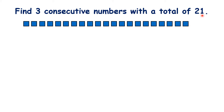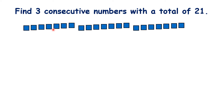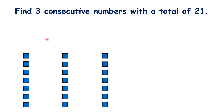Pause the video and see if you can find the three consecutive numbers that make 21. We have 21 blocks here and because we want to find three consecutive numbers, we can start by dividing these 21 blocks into three groups. We have seven blocks in each group because 21 divided by 3 is 7.